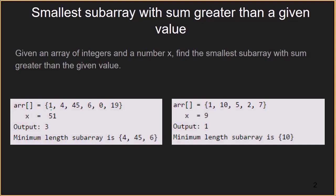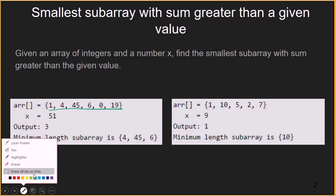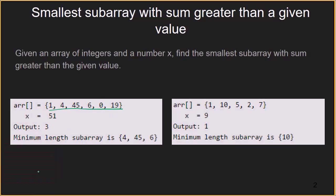For example, here we are given the array containing elements 1, 4, 45, 6, 0, and 19. The value of x is given as 51. So the smallest subarray whose sum is greater than the given value contains 4, 45 and 6 — that is a total of 3 elements.